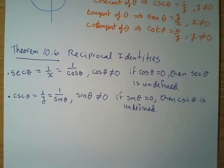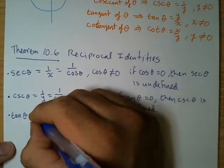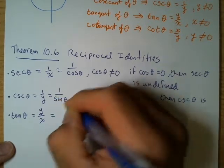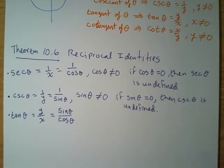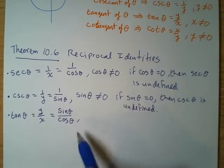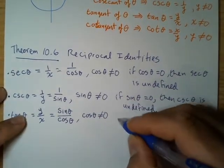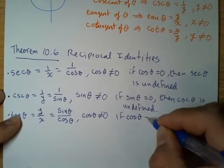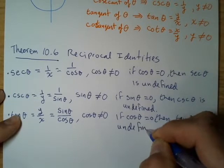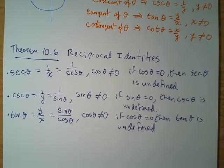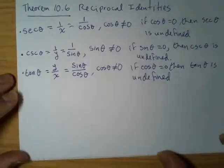The tangent of theta: we defined it as y over x, and using substitution this is equivalent to sine of theta over cosine of theta. The condition is that cosine of theta must not be zero. If cosine of theta equals zero, then tangent of theta is undefined.